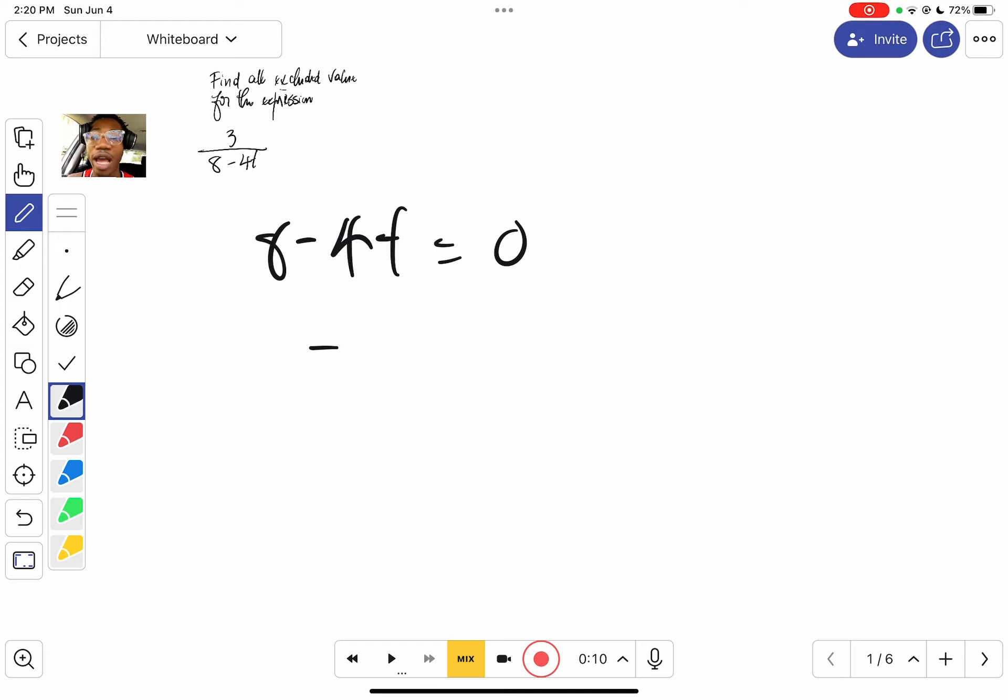We're going to keep all the like terms on one side and the other terms on the other side. So negative 4t equals negative 8, because it's going from one side to the other.